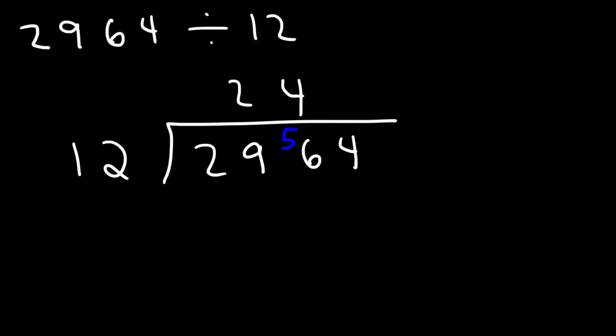So let's transfer the 8 to the next number. Now 12 goes exactly into 84 seven times. So the answer for this problem is 247. Now let's move on to our next example.